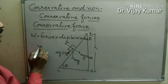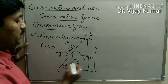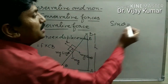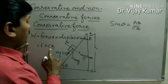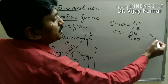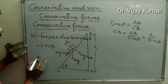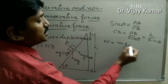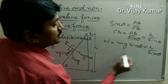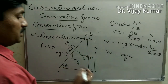The force F along the incline is mg sin theta, and the displacement CB is AB upon sin theta, which equals H upon sin theta. So work done equals mg sin theta into H upon sin theta, and sin theta cancels out. Work done becomes mgH. This is the work done when the body follows this inclined path — this is situation number one.